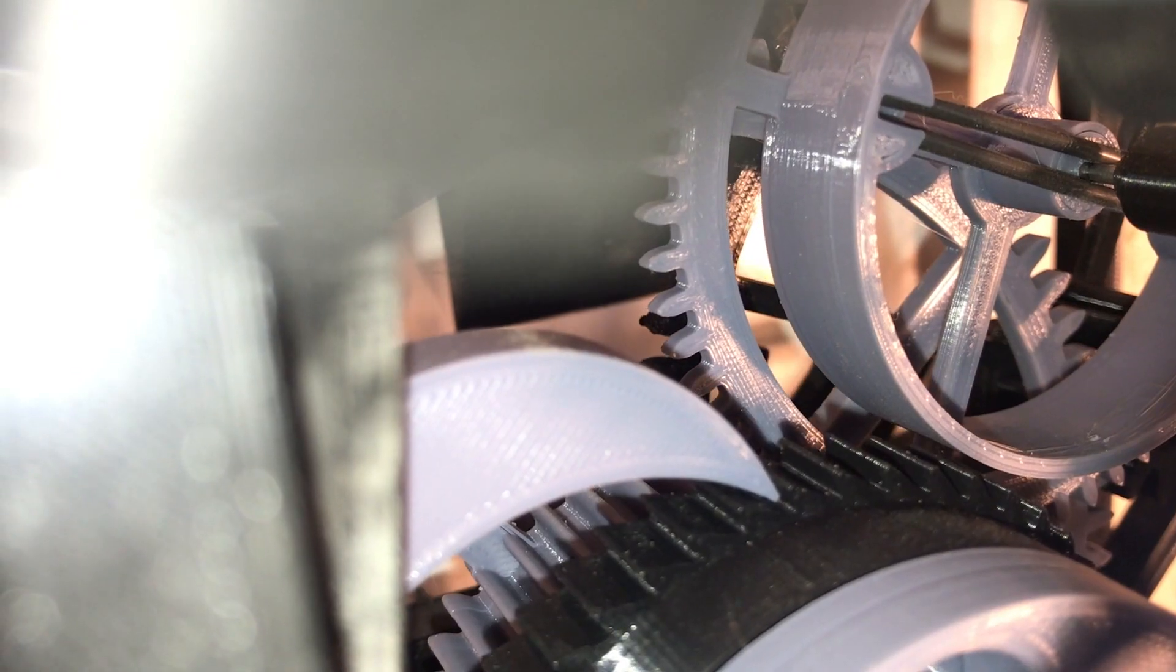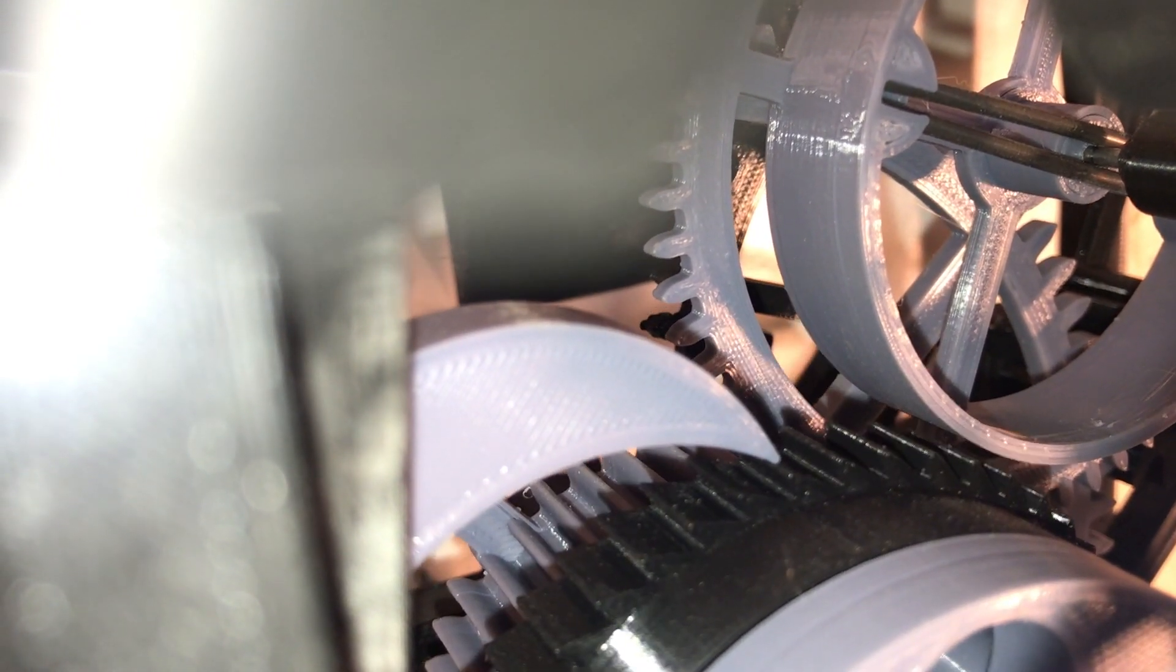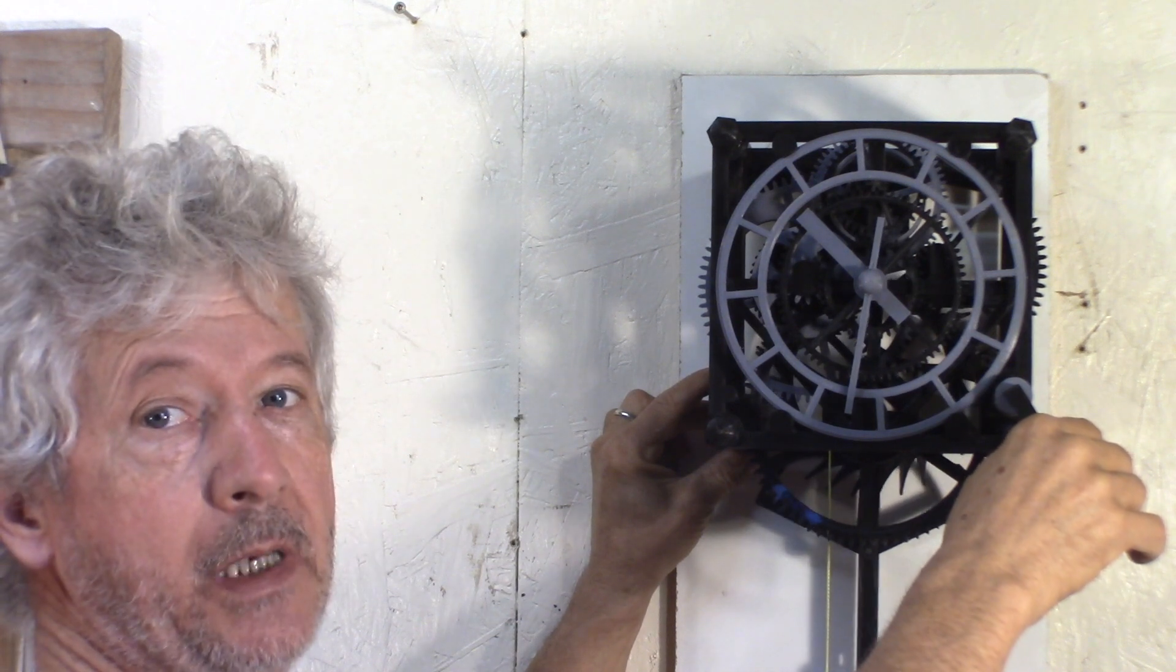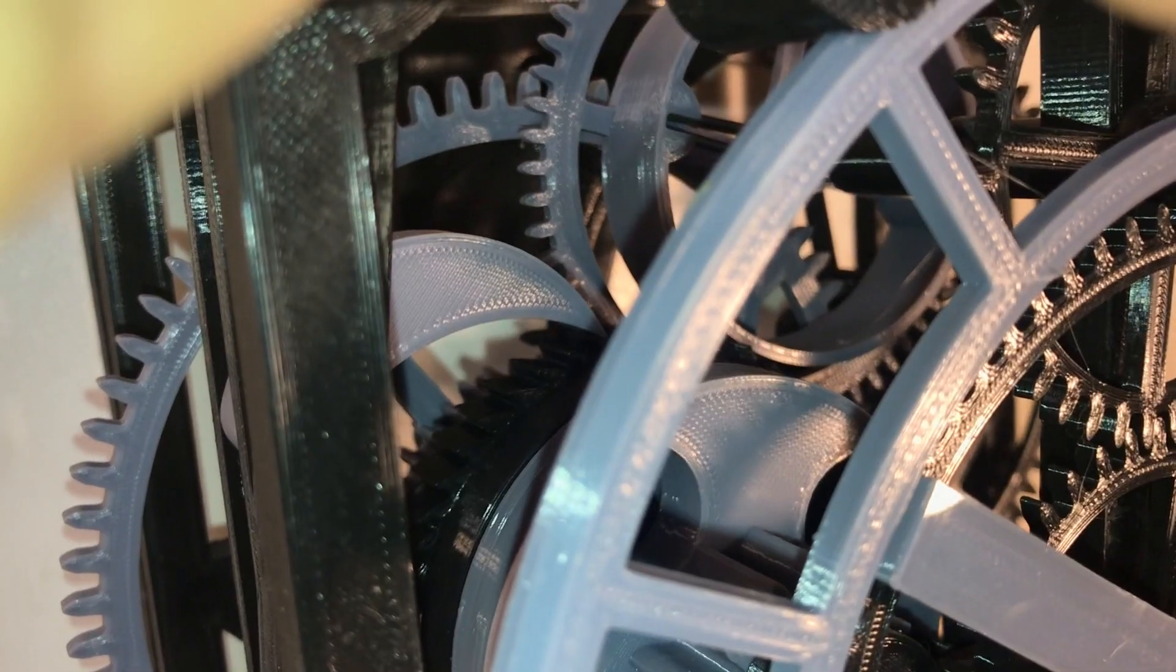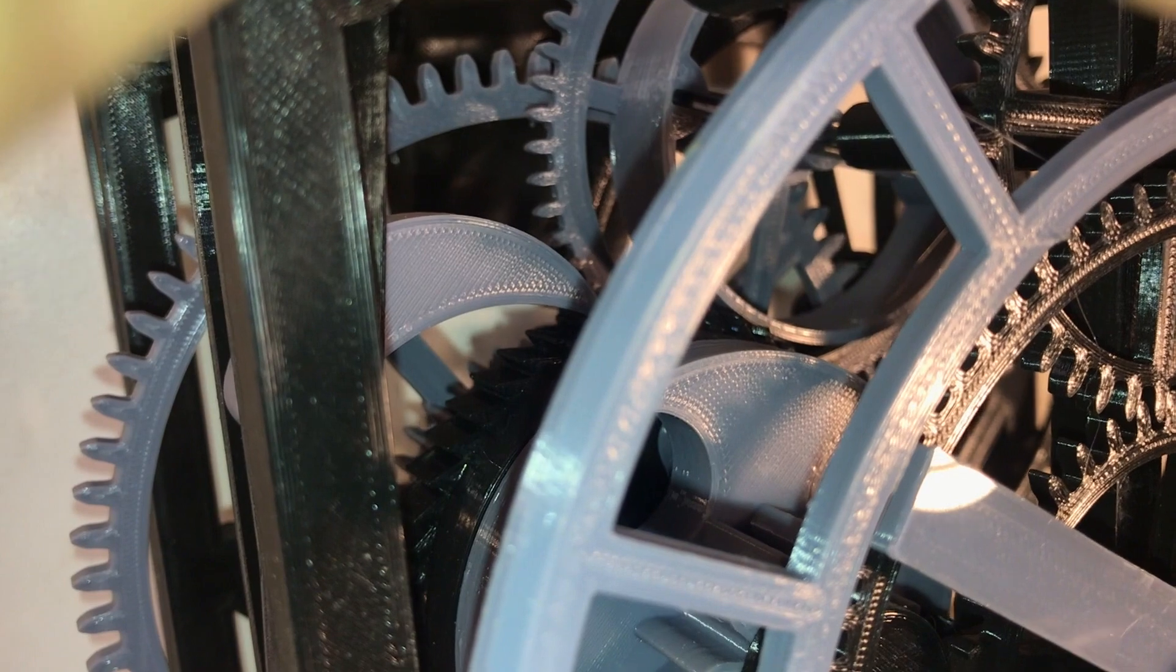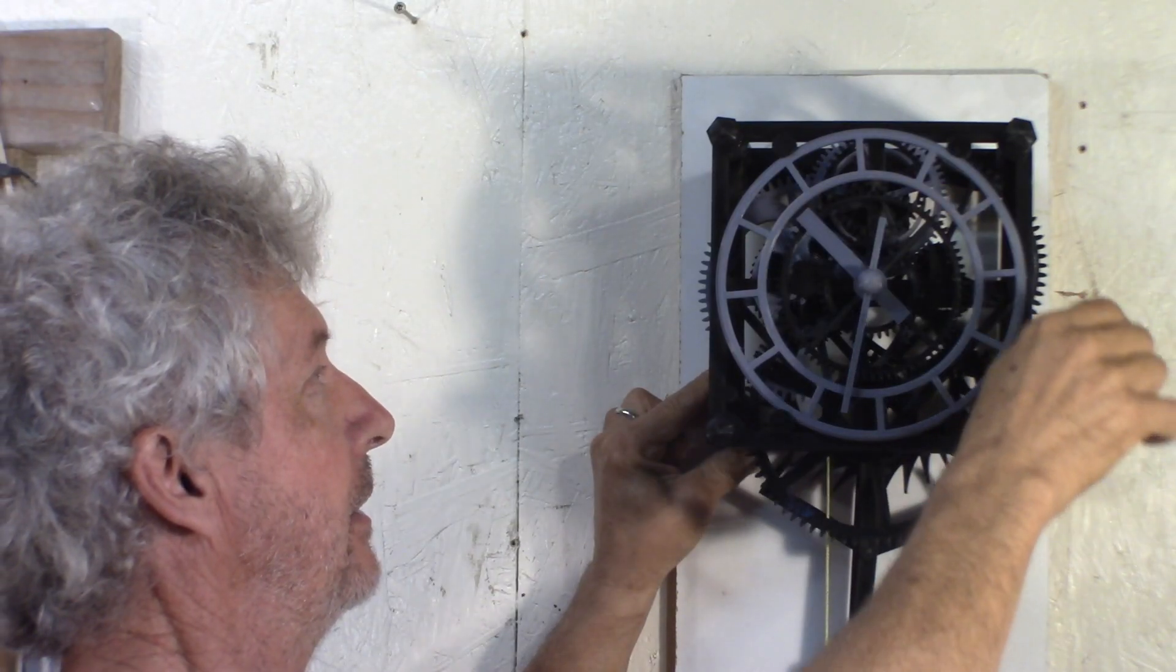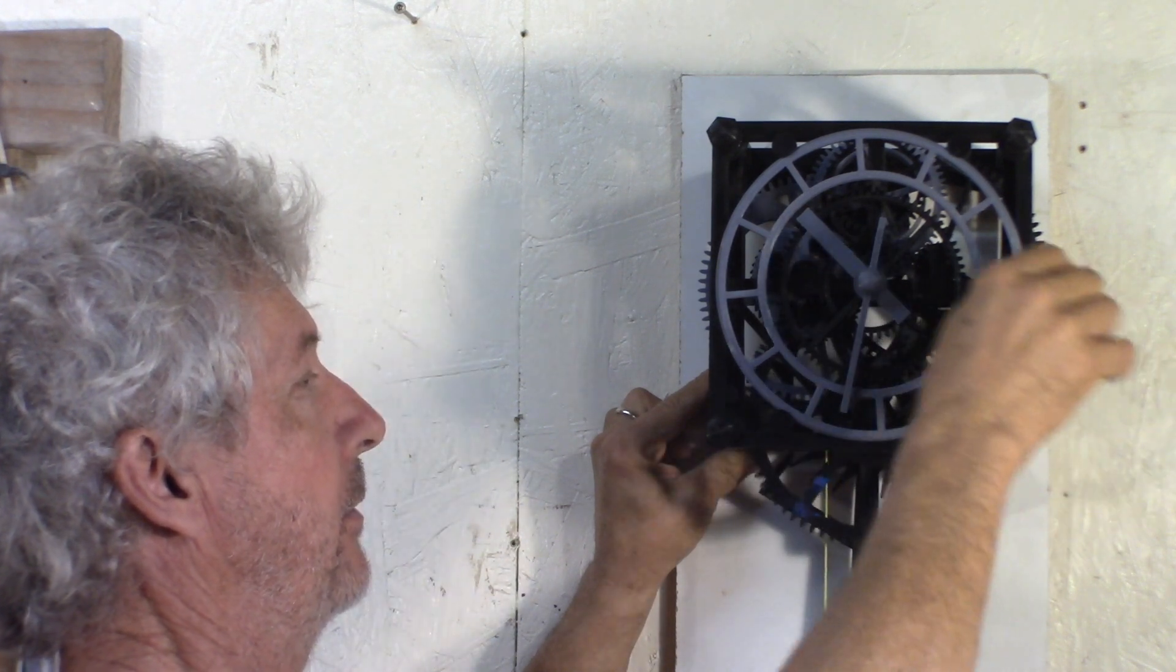When I go to rewind, the ratchet is going to catch and hold that maintain disc. Then when I rewind, the maintain disc spring is still going to power the clock while I rewind.